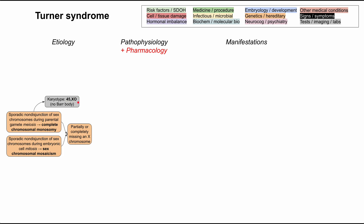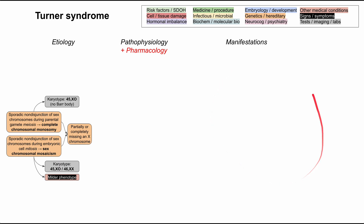The karyotype is 45X — nothing. Remember that a normal karyotype for a woman would be 46XX, but in this case they're missing that second X. The other way this can happen is sporadic non-disjunction of sex chromosomes during embryonic cell mitosis, resulting in sex chromosome mosaicism, where part of your cells will have the faulty karyotype 45X and the other batch of cells will have 46XX. Part of the cells will be normal, part will be abnormal, and because you have some normal cells, these patients will have a milder phenotype and probably won't have as severe manifestations as the complete chromosomal monosomy type.